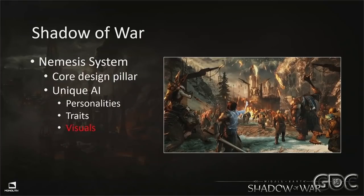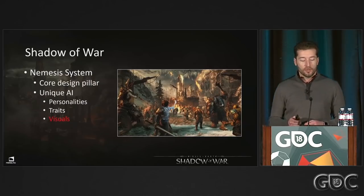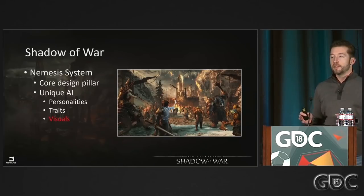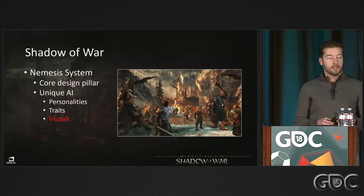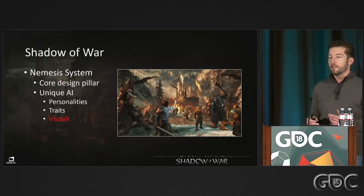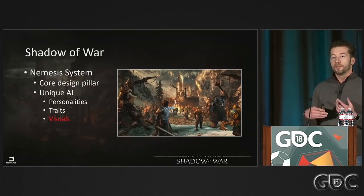Shadow of War uses the Nemesis system. We're not going to talk about it in depth, as it's not really relevant to the performance and memory optimizations. However, it is a core design pillar of the game, and it dictates that every single AI or character you encounter is unique — they have unique personalities, unique traits, and importantly for this talk, unique visuals. The other takeaway is that compared to Shadow of Mordor, we're now doing war, which means more of everything.